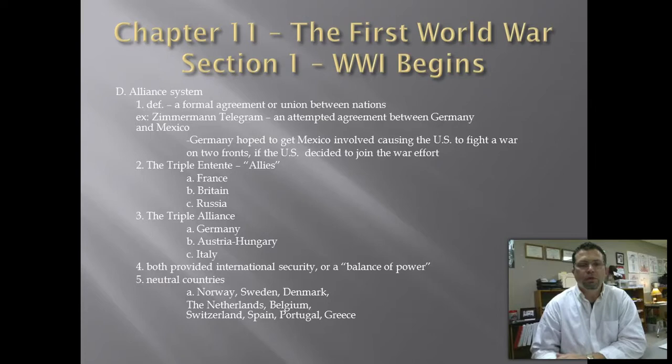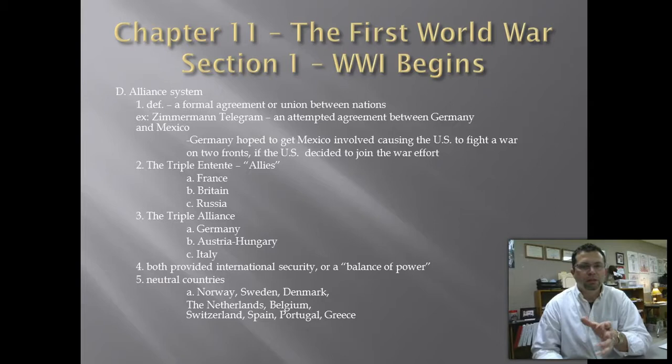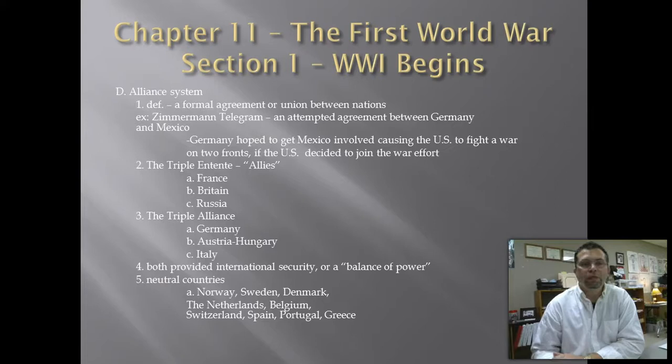Germany knew Mexico didn't have a good relationship with the United States around 1916, so they sent a coded message to Mexico stating: if the United States gets involved in the war, we would like you to become involved. The purpose was to force the United States to fight a battle on two fronts, which is not a good war strategy. The incentive for Mexico to join was Germany's promise that if they won the war, Mexico would regain all of their lost territory — not just Texas, but the entire southwest portion of the United States would be given back to Mexico.